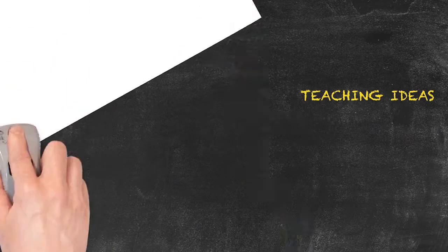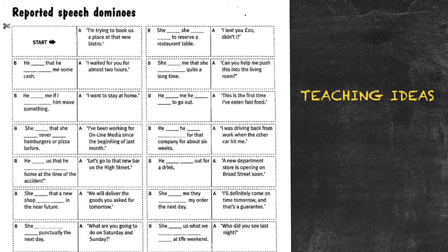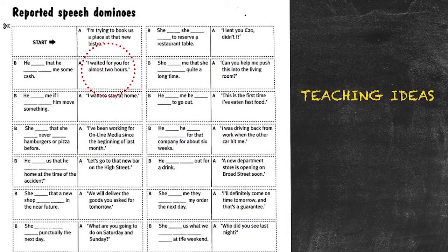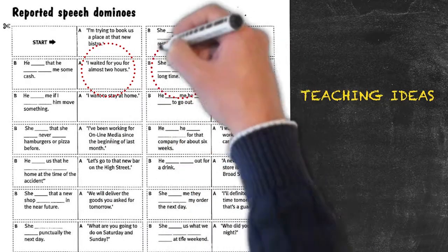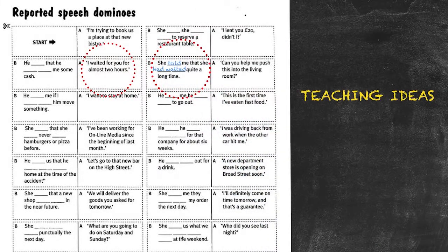Here's another teaching idea for reported speech, this time utilizing a series of domino cards. The teacher will have cut out the cards before class. To begin the activity, the teacher distributes the cards to the students. Each card is half direct speech and half reported speech with gaps. Students match the direct speech to the reported speech and add in the critical bits. If the card says 'I waited for you almost two hours,' students identify the right card and fill in the gaps: 'She told me that she had waited quite a long time.' The activity continues until all of the cards are laid down.